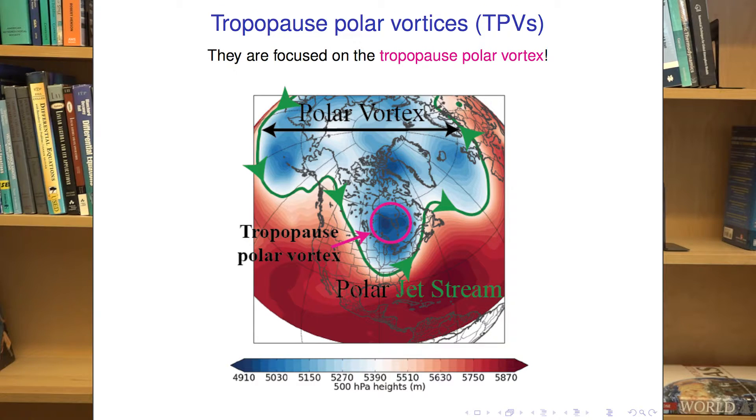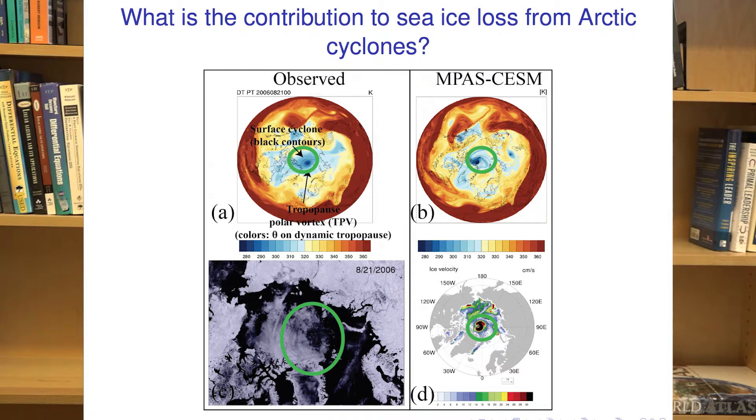TPVs are a smaller scale feature within the broader polar vortex. The polar vortex is essentially the entire region north of the jet stream, but TPVs are a bit smaller. If you get a really strong cold air outbreak or record low temperatures, most likely that's associated with a TPV overhead coming directly from the Arctic. Before they come out of the Arctic, I study how these TPVs can initiate surface cyclones — called Arctic cyclones — up in the Arctic. Because of sea ice thinning in recent years, these cyclones can affect sea ice, and we study whether Arctic cyclones are making a significant contribution to that sea ice loss.